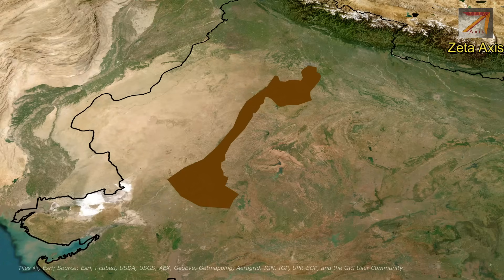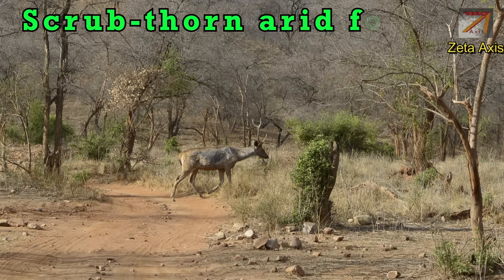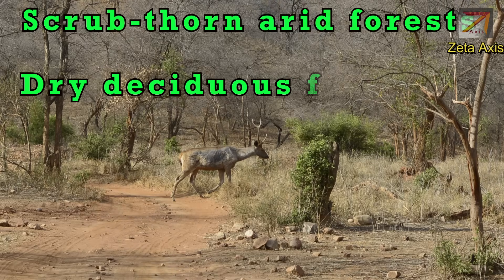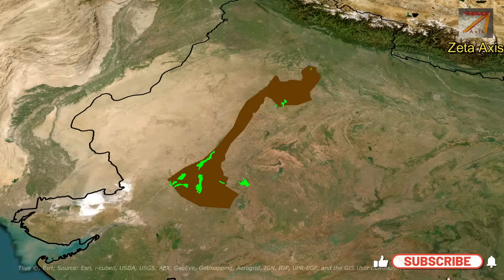The Aravalli range also has some important protected areas, which include the Sariska Tiger Reserve. It is located in Alwar district of Rajasthan and comprises scrub thorn arid forest, dry deciduous forest, grasslands, and rocky hills. The Aravalli hills are also home to a large number of wildlife sanctuaries.